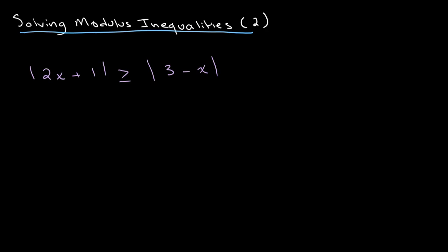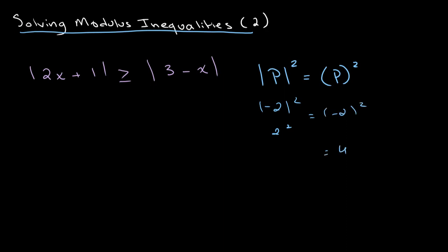If you recall, a general rule is that the absolute value of p, whole squared, is essentially the same thing as just normally squaring that number — so the absolute value of p, squared, is equal to p squared. For example, the absolute value of negative 2, squared, is the same as 2 squared, and both are equal to 4.